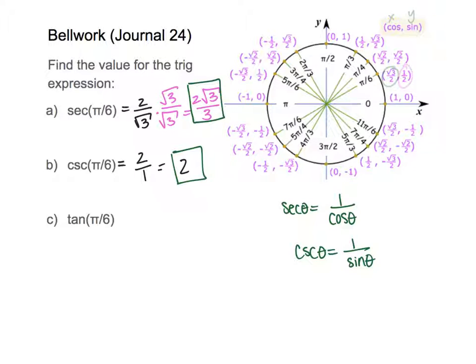And then last but not least, I have tangent. So if I want to figure out what tangent is, tangent is what we've learned is y over x, but it's also sine over cosine.